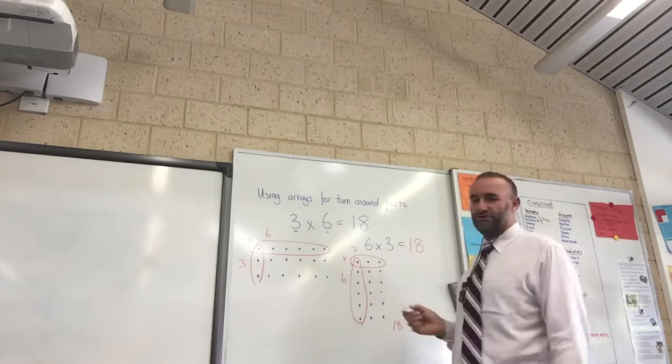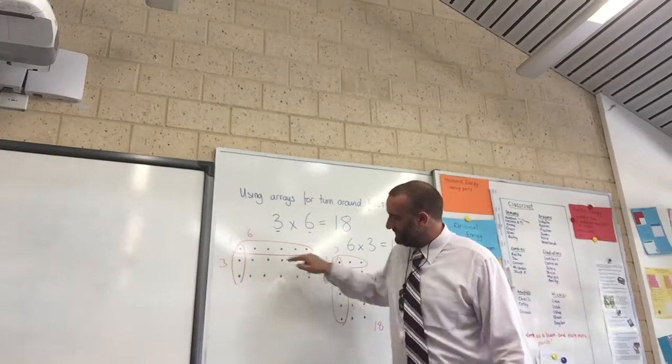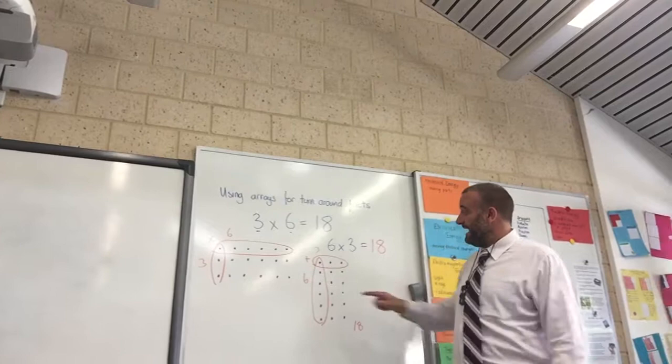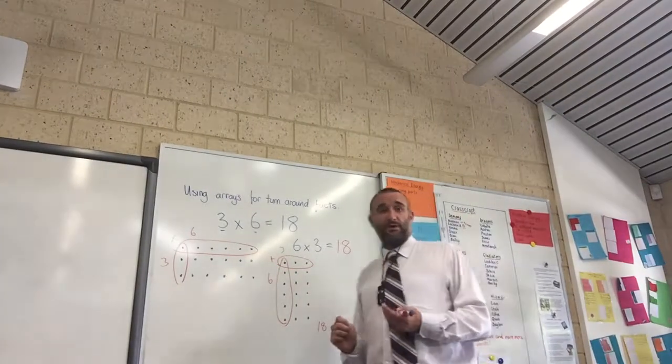And that is what turnarounds mean. So 3 multiplied by 6, or 6 multiplied by 3, is the same. And that will work for any multiplication problem.